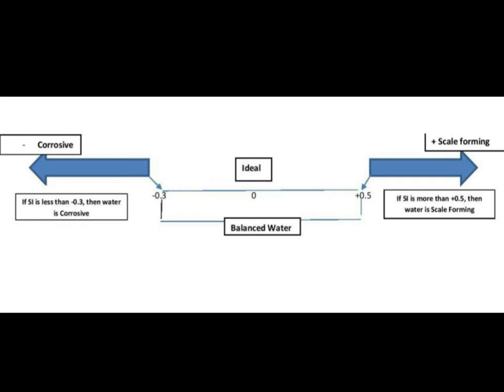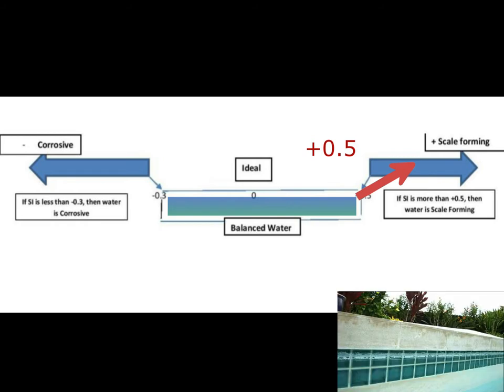Ideal balanced water is negative 0.3 to positive 0.5. If you're above positive 0.5, you have scaling, oversaturated water. The water is going to scale everything it touches — the pool surface, all your equipment like heater elements, your impeller, and salt chlorine generators will be scaled up and won't make chlorine. If it can't make chlorine, you won't have enough disinfectant in the water.